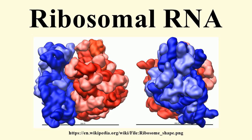The tertiary structure of the small subunit ribosomal RNA has been resolved by X-ray crystallography. The secondary structure of the small subunit rRNA contains four distinct domains: the five prime, central, three prime major, and three prime minor domains. A model of the secondary structure for the five prime domain is shown.